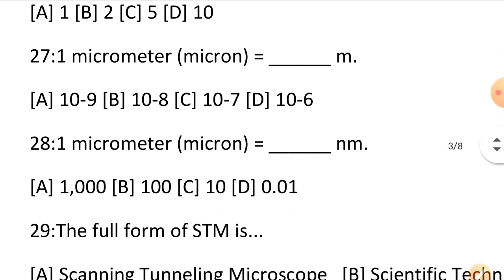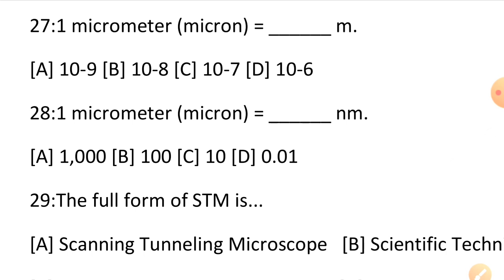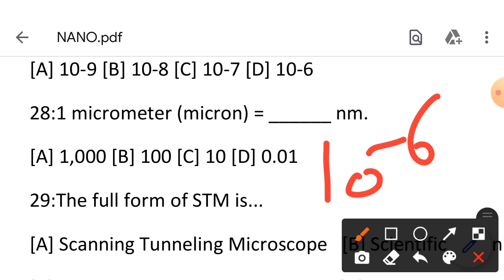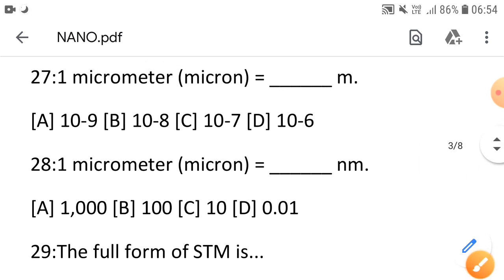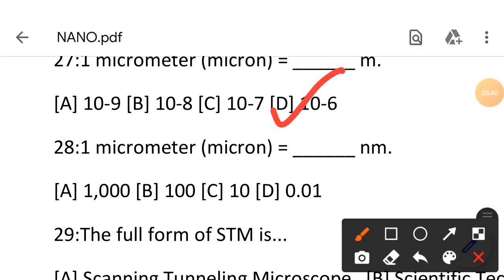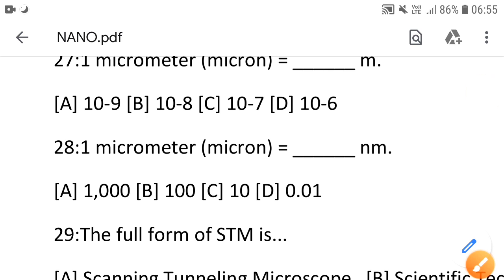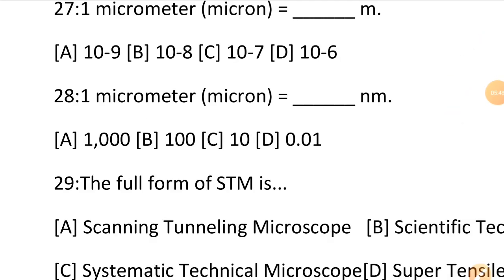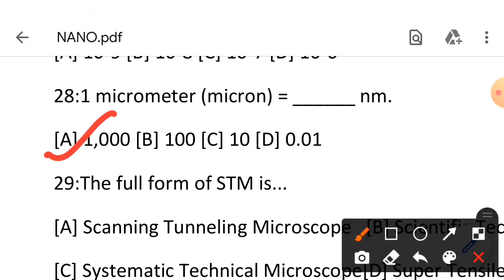Next, question number 27: 1 micrometer or micron is equal to dash meter. Yesterday I told you that nanometer is 10 raised to power minus 9 meter. When you talk about micro, how much is it? 10 raised to power minus 6 meter. So the answer for question 27 is 10 raised to power minus 6 meter. Similarly, 1 micrometer in nanometer: 10 raised to power minus 6 to 10 raised to power minus 9 range. Minus 6 minus 9, what's the difference? 3. So 1 micrometer contains how many nanometers? 1000, which is 10 raised to power 3.